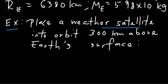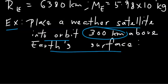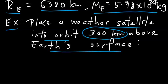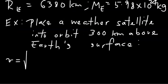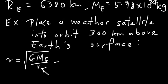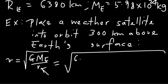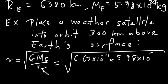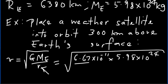Let's do a simple exercise. If you want to place a weather satellite into orbit 300 kilometers above Earth's surface, what should be its speed? The radius of Earth is 6,380 kilometers and the mass of Earth is 5.98 times 10 to the power 24 kilograms. Using the equation v equals square root of G times M over r, with G equal to 6.67 times 10 to the power minus 11, and the mass of Earth 5.98 times 10 to the 24 kg.